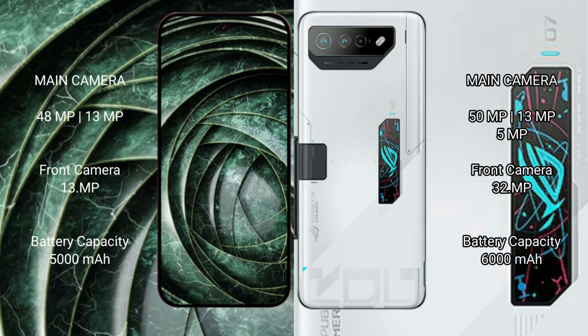The Google Pixel 9a features a rear dual camera setup with a 48MP main lens plus a 13MP ultrawide lens, and a 13MP front camera. The ASUS ROG Phone 7 Ultimate features a rear triple camera setup with a 50MP main plus 13MP ultrawide plus 5MP macro lens, and a 32MP front camera.